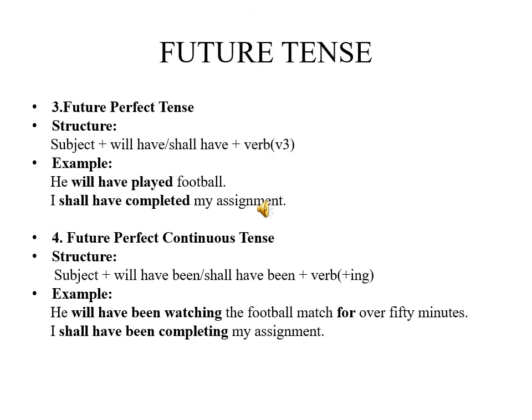The third type of future tense is future perfect tense. Its structure is subject plus will have or shall have plus verb third form. Example, he will have played football. I shall have completed my assignment.